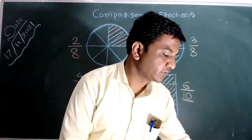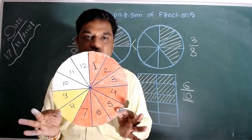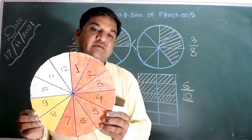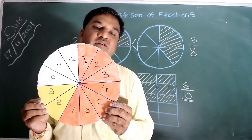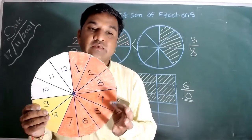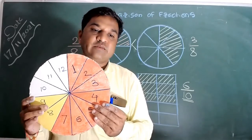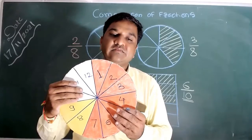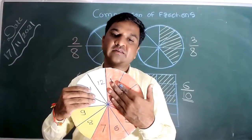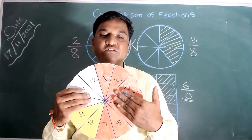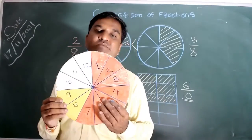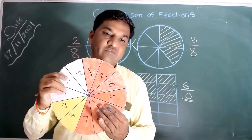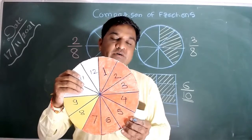Let's take one more example. We'll take a circular disk divided into 12 equal parts. You can see that 7 parts are shaded red, 2 parts are shaded yellow, and 3 parts are white. The fraction of red is 7 upon 12, the fraction of yellow is 2 by 12, and the fraction of white is 3 by 12. Clearly, the red portion is shaded the most, so the fraction of red — 7 by 12 — is the greatest. Second is the fraction of white — 3 by 12 — and the fraction of yellow — 2 by 12 — is the lowest.